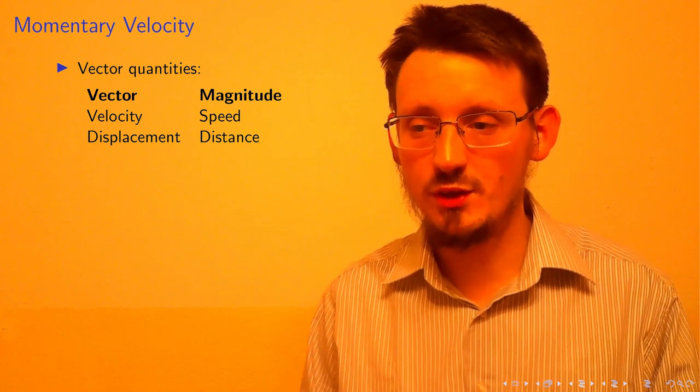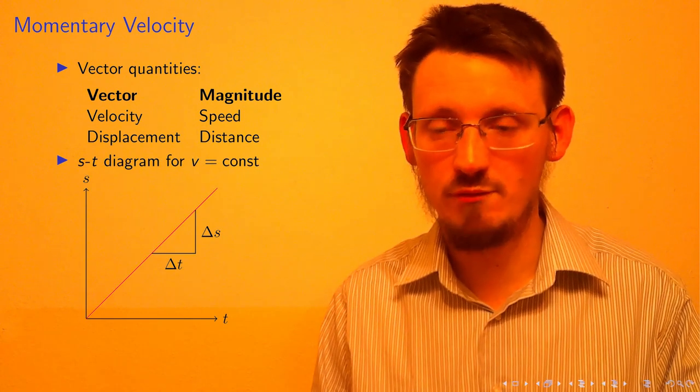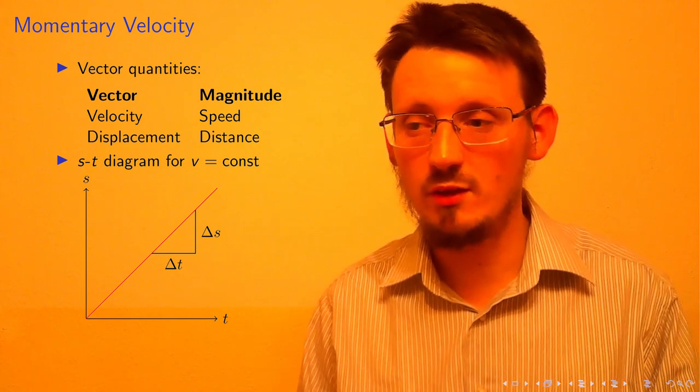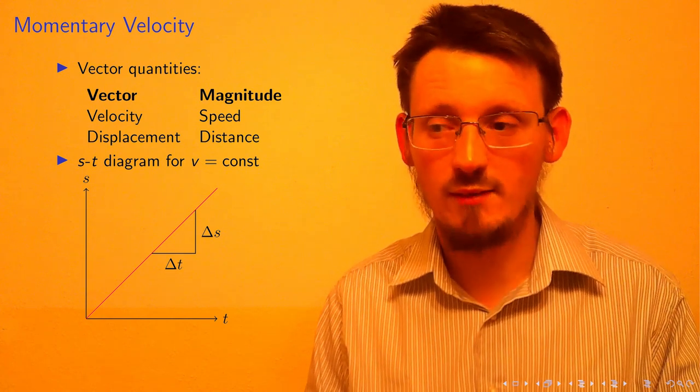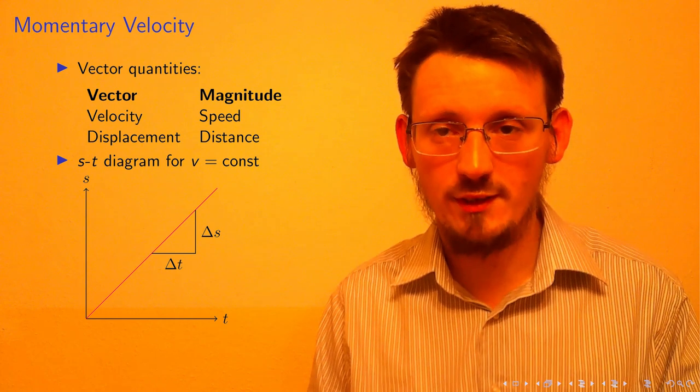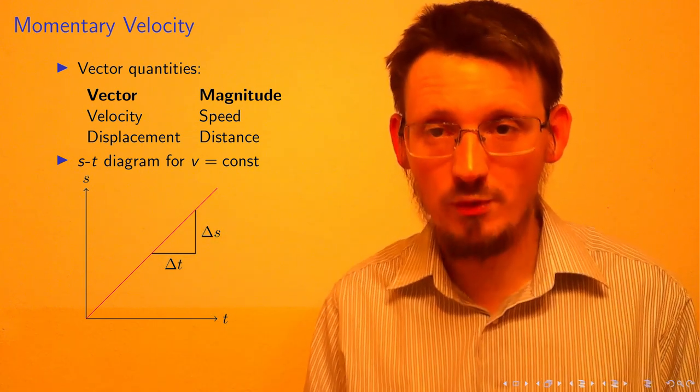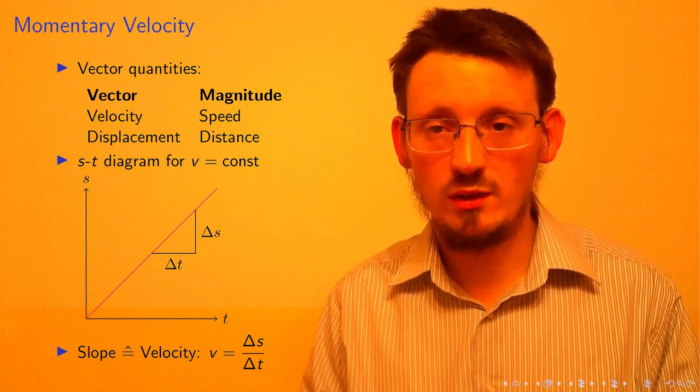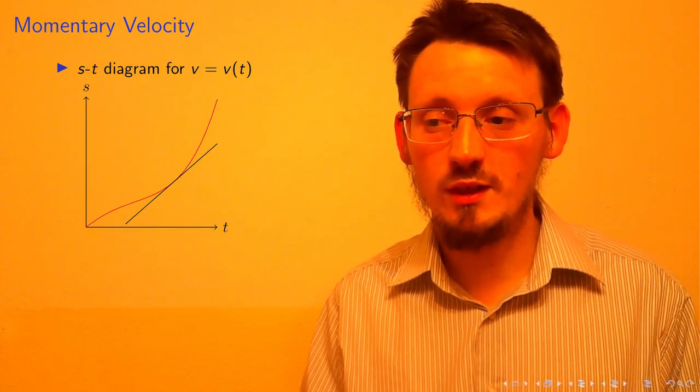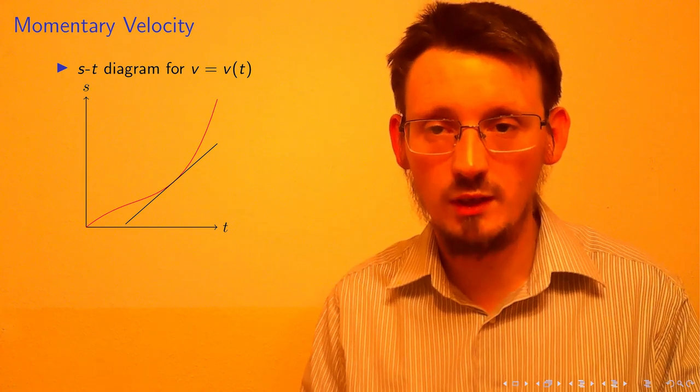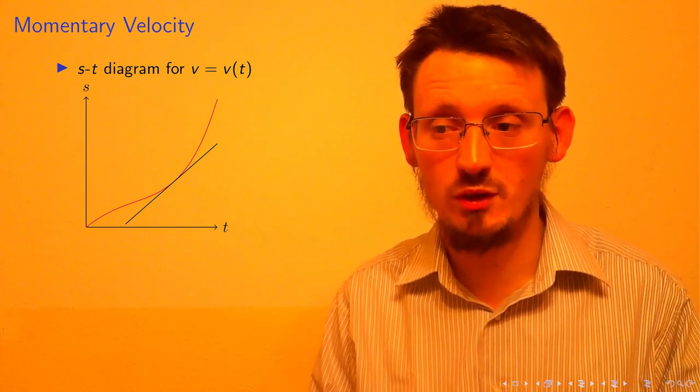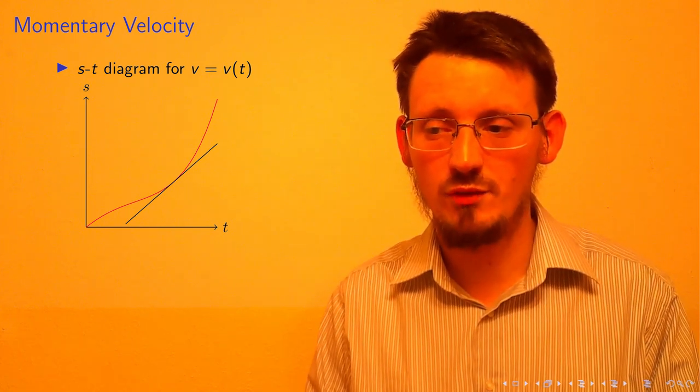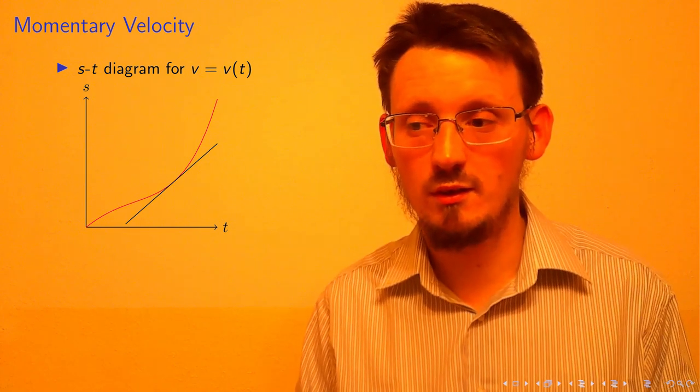Now, as you remember, we have only concentrated on objects so far traveling with a constant velocity, V is equal to constant. We can illustrate this with an ST diagram or a distance-time diagram as shown here, where the resulting graph is simply a straight line because V is constant. The fraction delta S over delta T is then just given as the slope of that line as displayed here also inside this graph. Now, we want to generalize this idea a little bit to calculate the velocity in the case in which V is not constant but instead by itself a function of T.